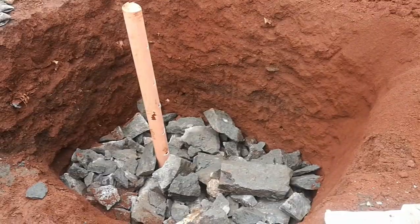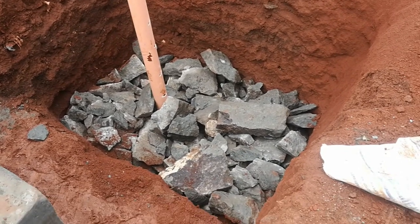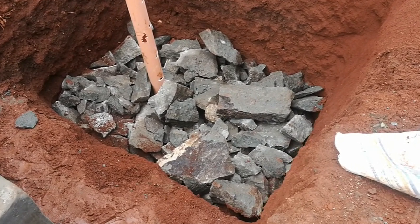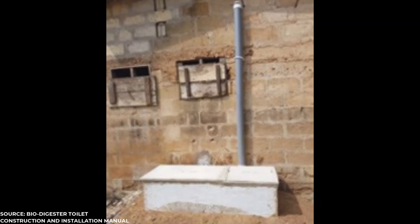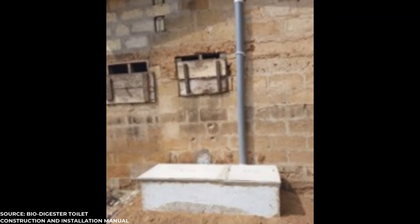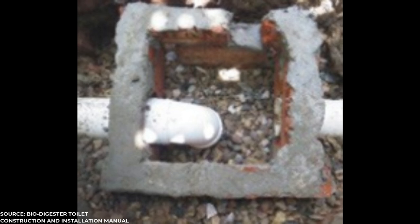A soak pit is installed in areas where the soil is well drained. It should be at least three meters away from any building within your compound. In cases where the water table is high or the soil is waterlogged, the biodigester is installed at the surface. Sun filters are connected to the biodigester to provide secondary treatment of the effluent. This will act similar to a soak pit.